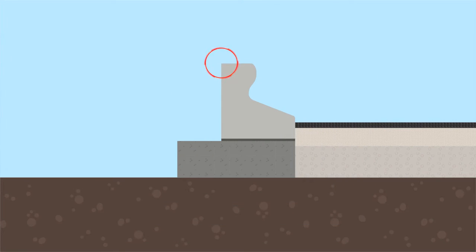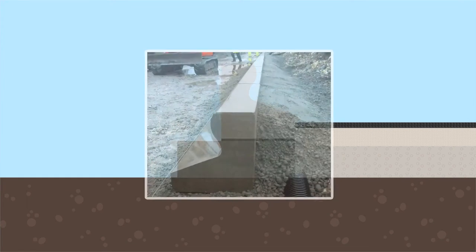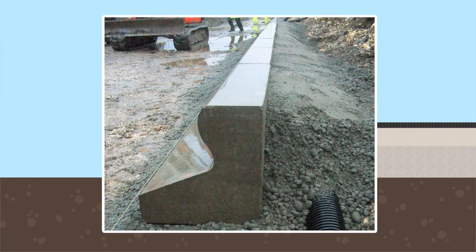Alternatively, it is possible to set out using the rear of the kerb as a datum, but it may be necessary to adjust the horizontal alignment to ensure the face of the kerbs align.